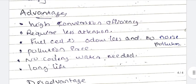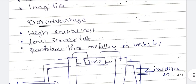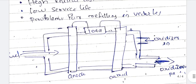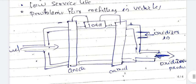Advantages of fuel cells include high conversion efficiency, require less attention, fuel cells are odorless, there is no noise pollution, it is pollution free, no cooling water is needed, and it has a long life. Disadvantages include high initial cost, low service life, and problems with refilling in vehicles.